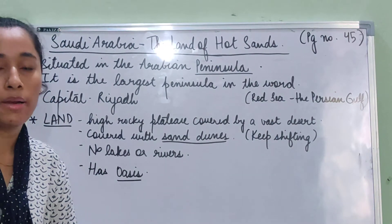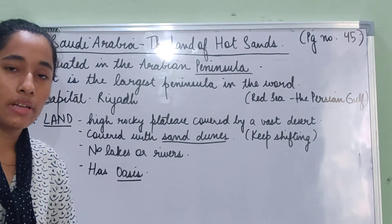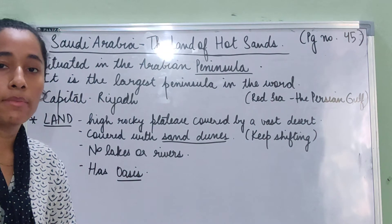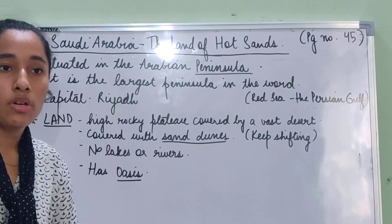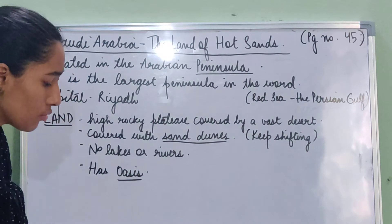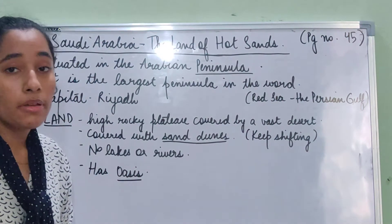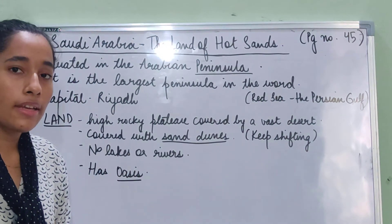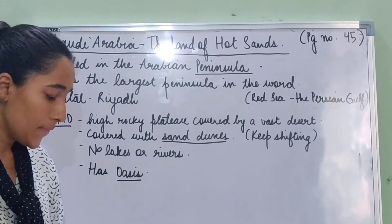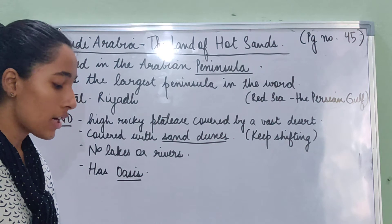This chapter, as you can tell by the name, is about the country Saudi Arabia — about its land, about the climate, about the people, and what is famous there. We are going to start reading on page number 45. Be ready with a pencil so that we can underline and mark the important things given in this chapter.